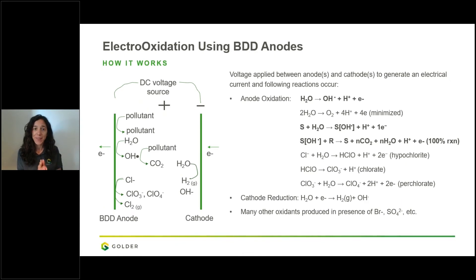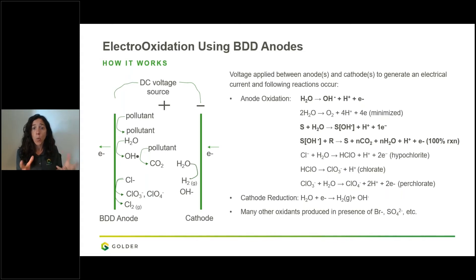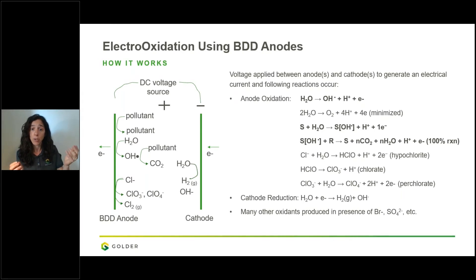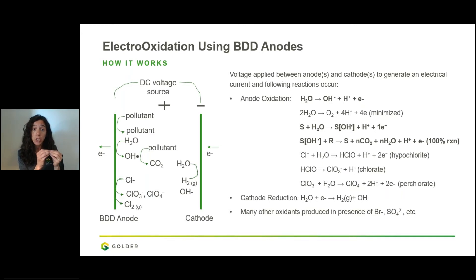Electro-oxidation is conceptually simple but chemically complex. You apply a voltage between two electrodes; current passes, and several chemical reactions occur at the electrode surfaces. On the anode, oxidation occurs — water meets the electrode and electricity to produce hydroxyl radicals (OH•) and electrons. There is also a reaction where water converts to oxygen gas. The OH radical sticks to the surface, and when an organic contaminant meets the adsorbed OH radical, chemical combustion occurs, mineralizing the contaminant all the way to CO₂.